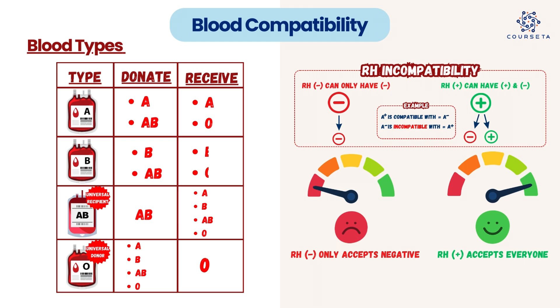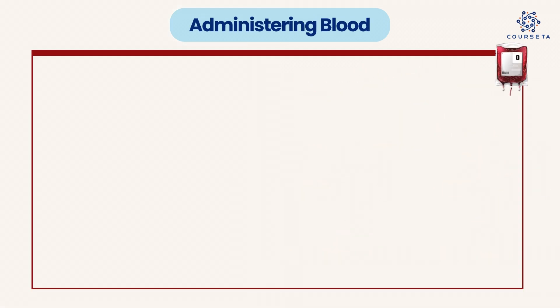For example, A positive blood is compatible with both positive or negative, so it would be fine with A negative. But A negative blood is only compatible with A negative — it would not be compatible with A positive. Now let's get into the administration of blood. These are the NCLEX and nursing school facts you'll need to know to be successful on your exam.